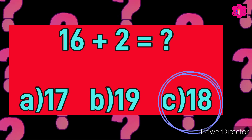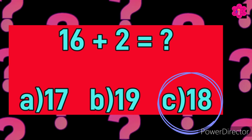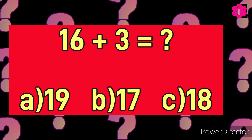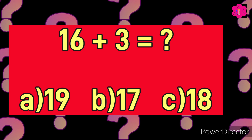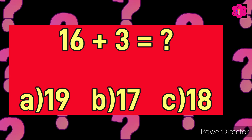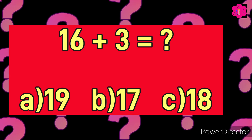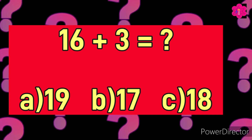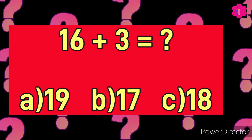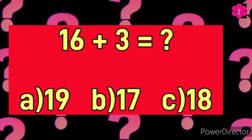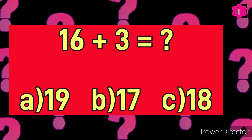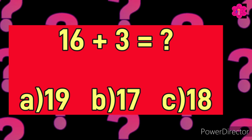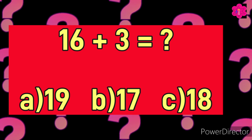The correct answer is C) 18. Ready for the next sum? 16 plus 3 is equal to — A) 19, B) 17, and C) 18. The time starts now.